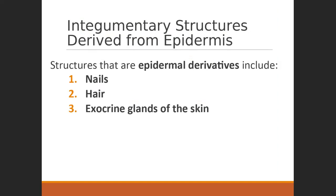Now we get into the accessory structures. Just like the skin, study these as diagrams — get a diagram of the skin, the hair, and the nail, and label it again and again. This integument system is 90% structure. Then go back and memorize the nuances of each layer. Knowing where it is already helps you understand what it does intuitively — so less memorization, more intuitive learning.